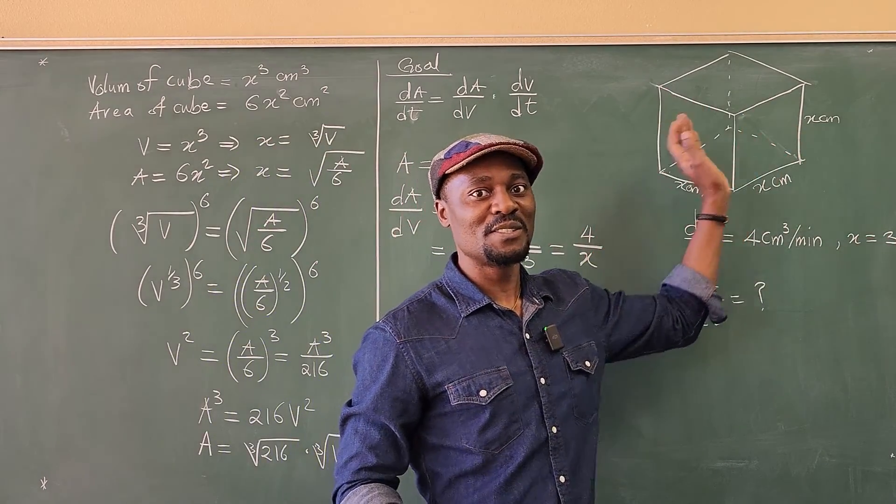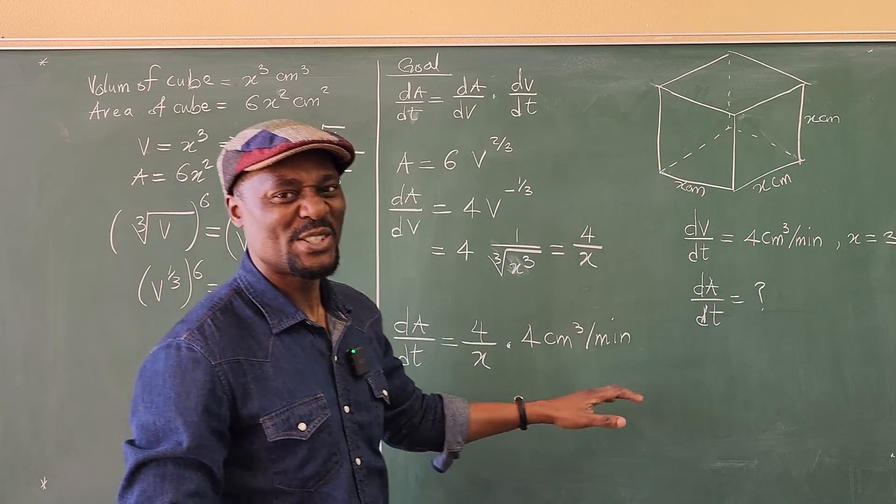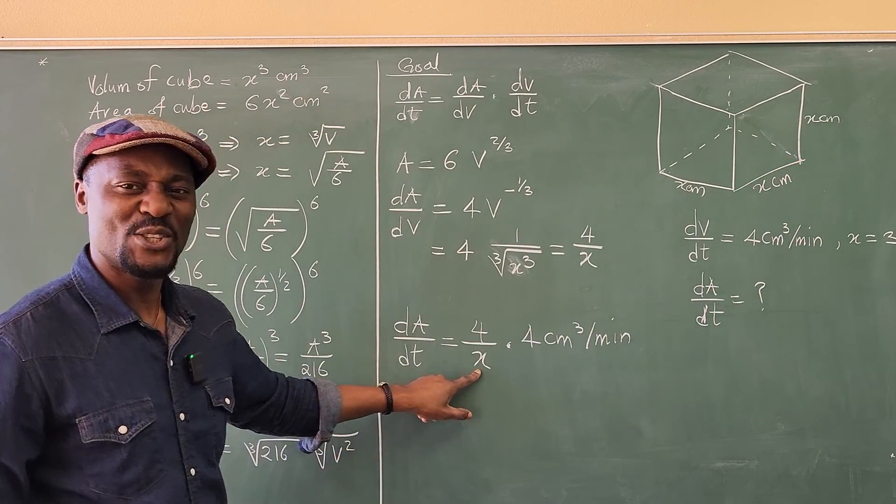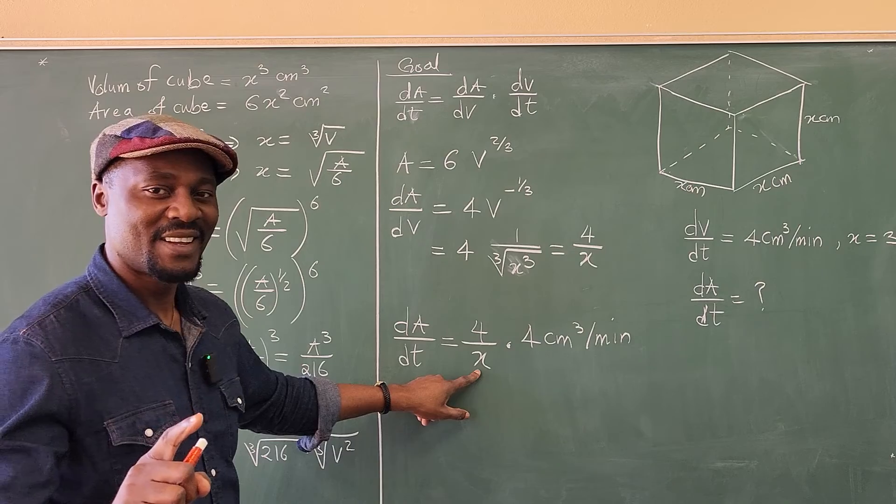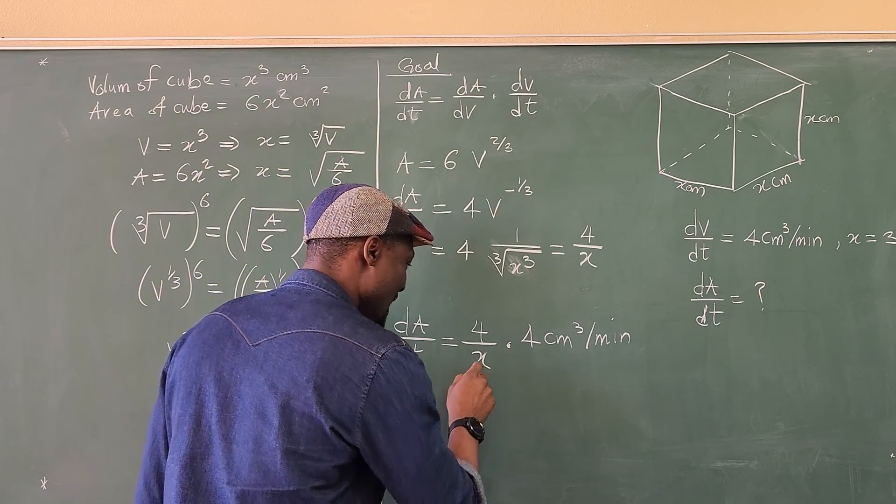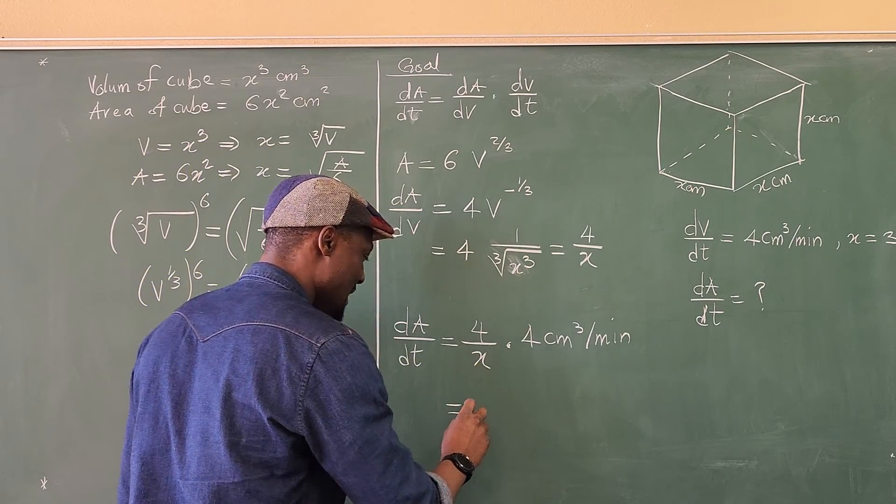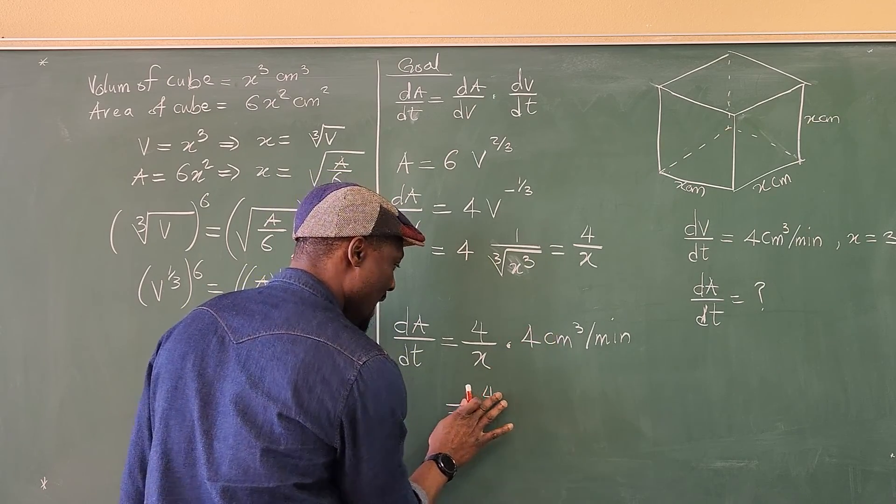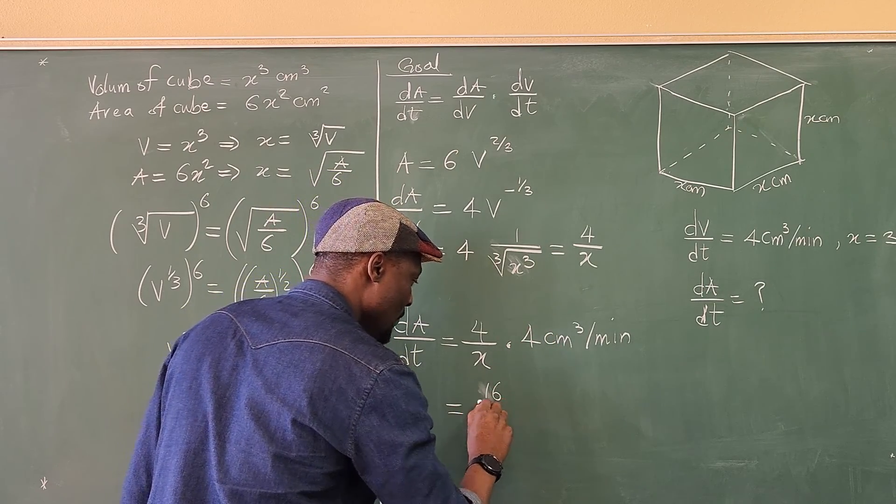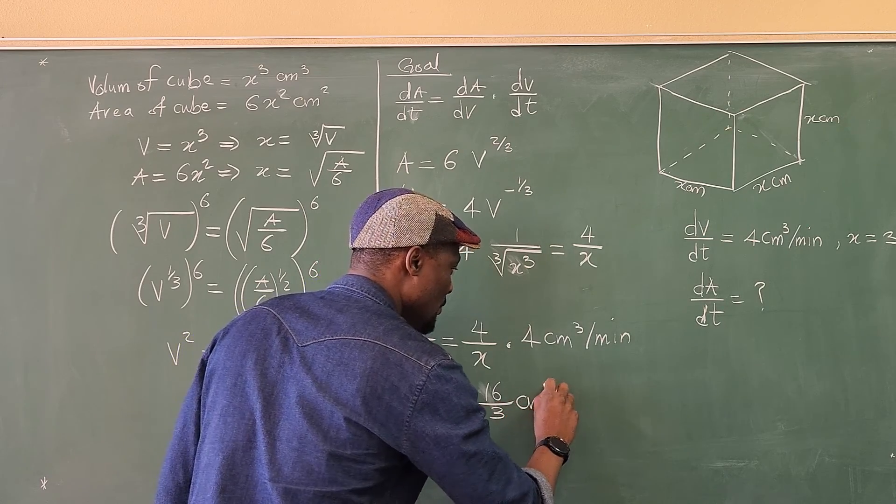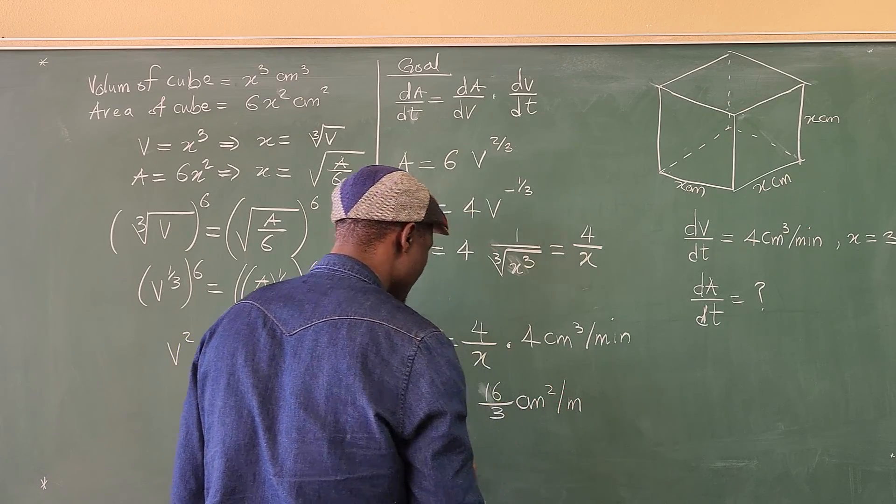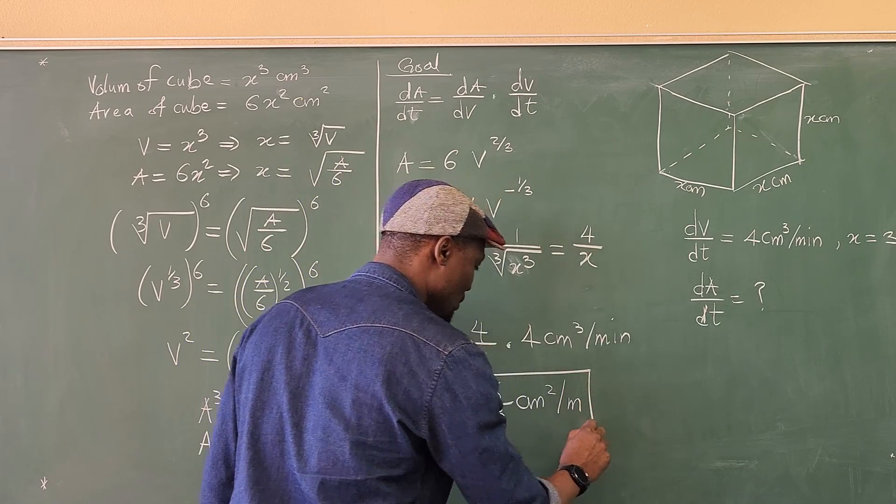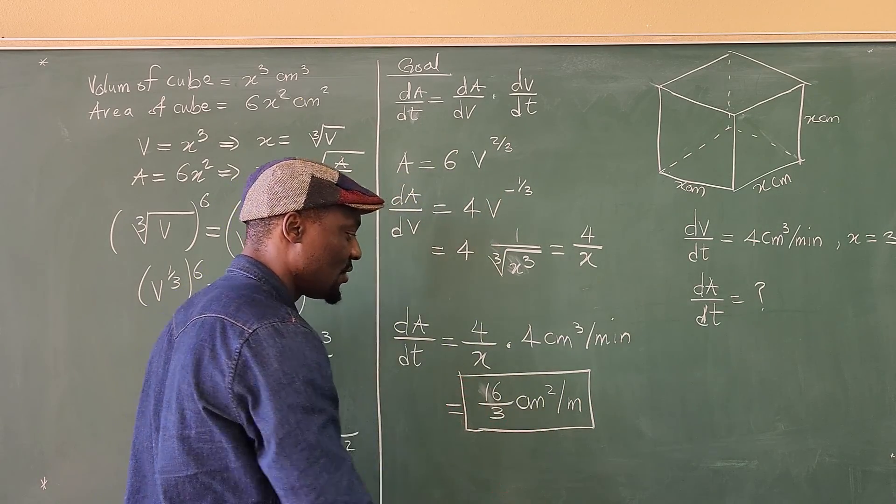So instead of computing all this volume at the beginning, just wait until you get to the end because I only need to use x once. So what's my answer? x equals three means my dA/dT is four times four. That's 16 over three centimeters squared per minute. This is the rate at which the surface area is changing.